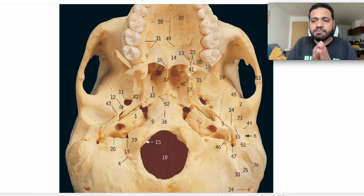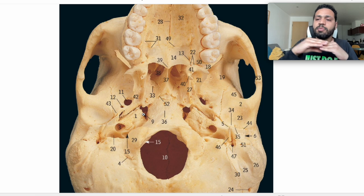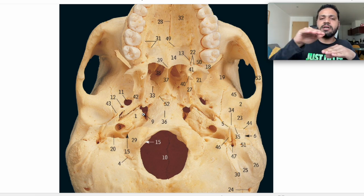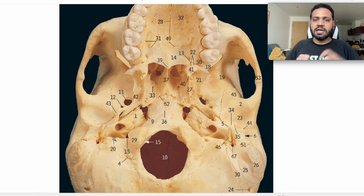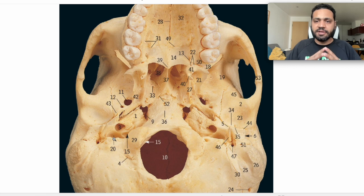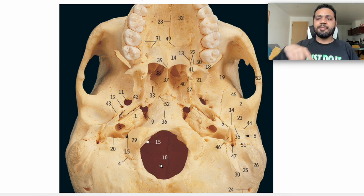Number 12 is foramen spinosum, containing the middle meningeal artery. Number 3 is the carotid canal, containing the internal carotid artery. Number 9 is foramen lacerum, composed of two parts: the lower part is cartilaginous or completely closed, and the upper part has the internal carotid artery passing over it. Number 20 is the jugular foramen, containing the jugular vein, inferior petrosal sinus, sigmoid sinus, and cranial nerves 9, 10, and 11 — glossopharyngeal, vagus, and accessory nerve. Number 15 is the hypoglossal canal, containing the hypoglossal nerve. Number 10 is foramen magnum, the biggest one, containing the medulla oblongata, spinal cord, spinal arteries, vertebral arteries, and the apical ligament of the odontoid peg. Number 47 is the stylomastoid foramen, containing the stylomastoid artery and the facial nerve coming out of the skull.